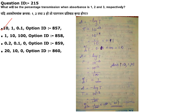Next: what will be the percentage transmittance when absorbance is 1, 2, and 3 respectively? The formula is A = −log T, so T = 10^(−A). For absorbance 1: 10^(−1) = 0.1, so percentage transmittance is 10%. For absorbance 2: percentage transmittance is 1%. For absorbance 3: percentage transmittance is 0.1%. Answer is option 1.